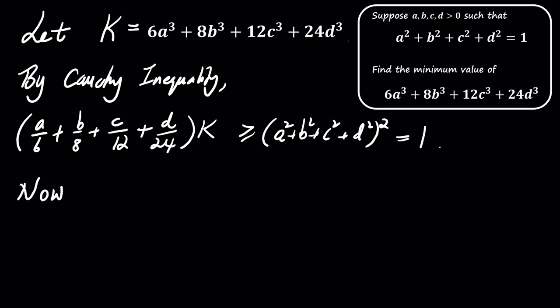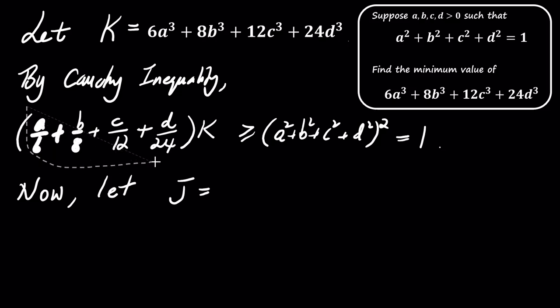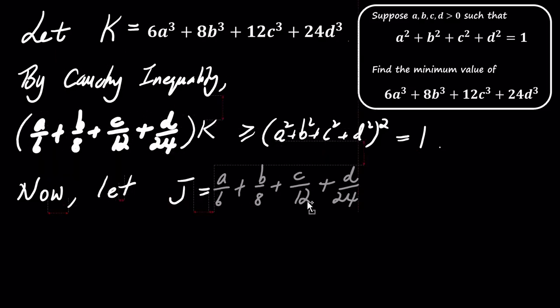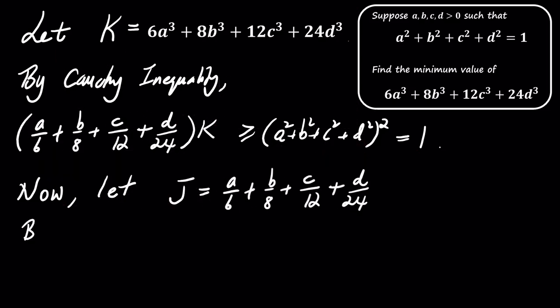Next, we define j as (a over 6) plus (b over 8) plus (c over 12) plus (d over 24). By applying the Cauchy-Schwarz inequality again, we can bound j.